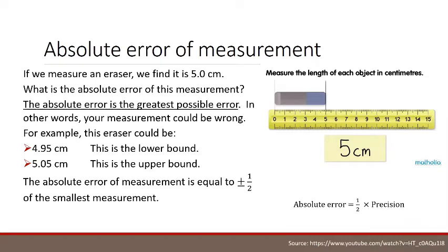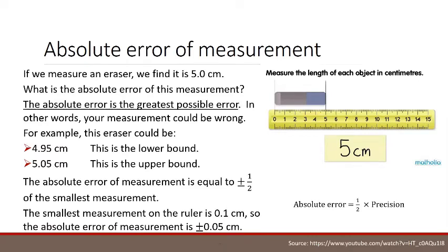You can see on this ruler, the smallest measurement is 0.1 of a centimeter. So the absolute error equals half times the precision of the ruler. The smallest measurement on the ruler is 0.1 centimeters, so the absolute error of measurement is plus or minus 0.05 centimeters.